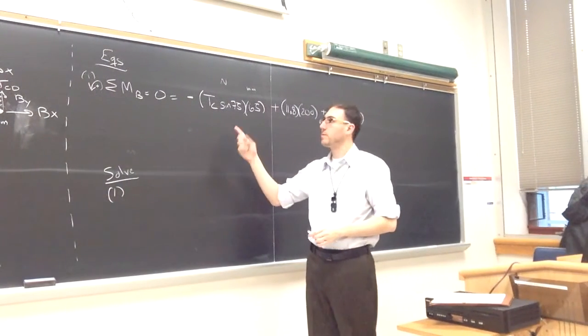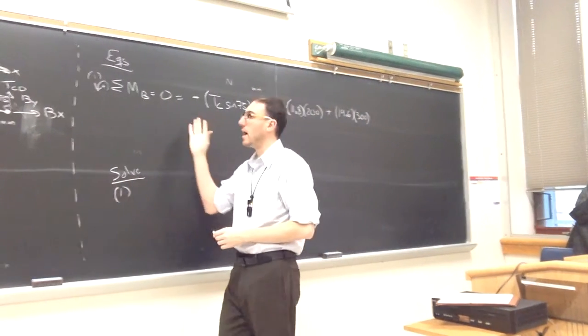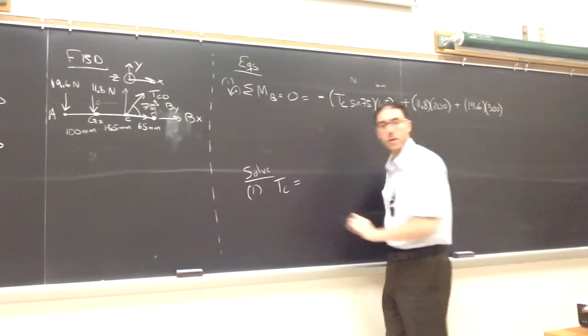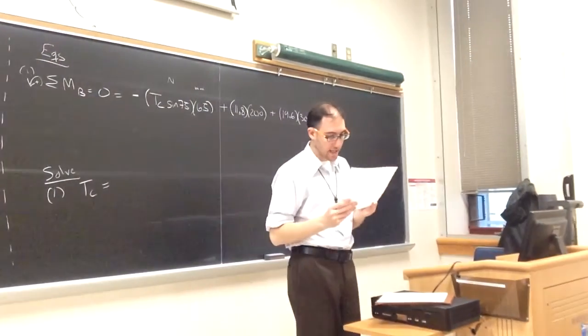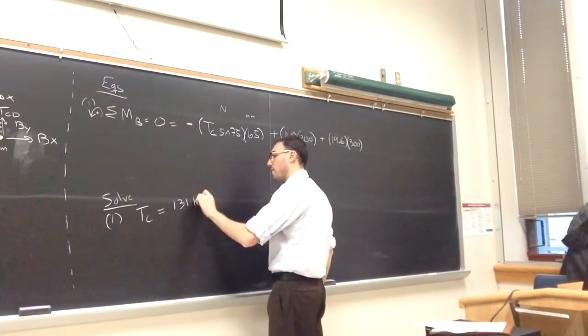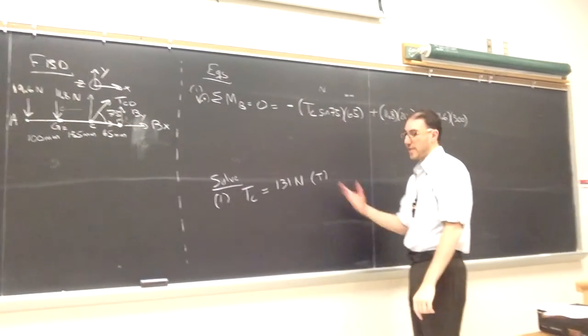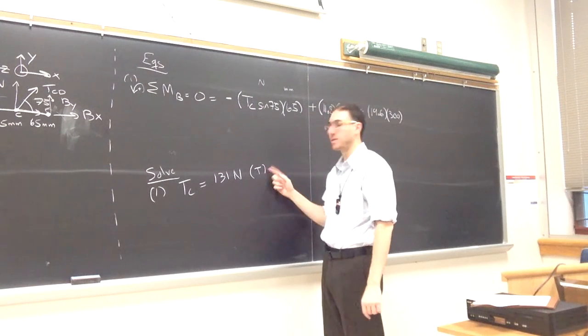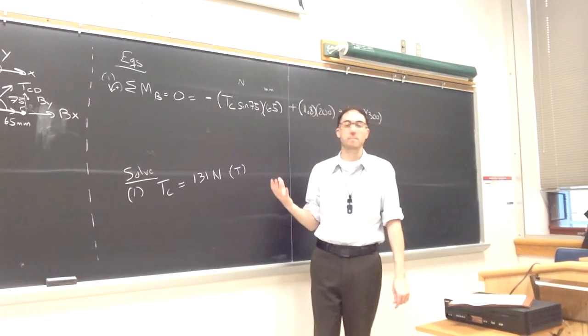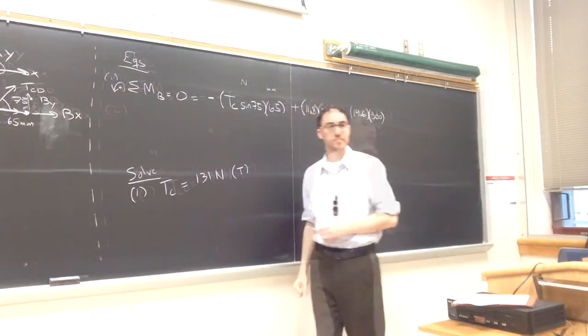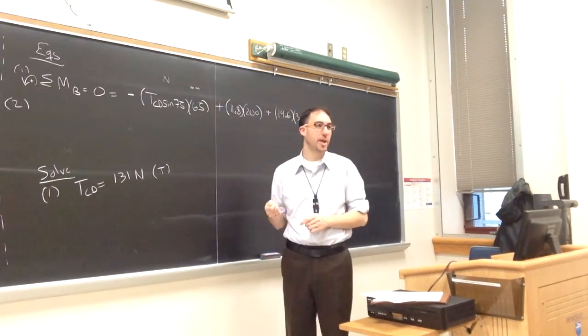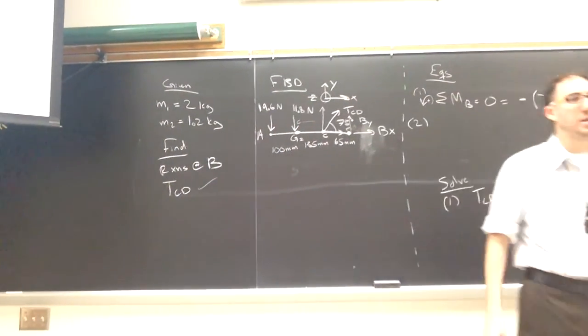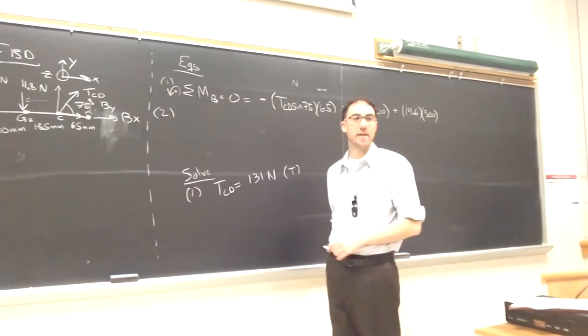Because we started with the moment equation, which many times is a good idea in these 2D problems because we can get a number right away, the only unknown is TCD. So we can solve equation one for the tension in the muscle is 131 newtons. A rope or a beam or a cable can be in tension or in compression. It's positive, meaning our assumption was correct. It is in tension, and it has to be, because a muscle acts like a rope. It can only hold a tension in it. One equation for one unknown, we have one thing we were asked to find for, the tension in the rope or the muscle CD.